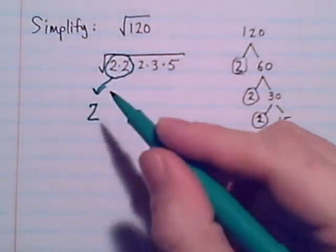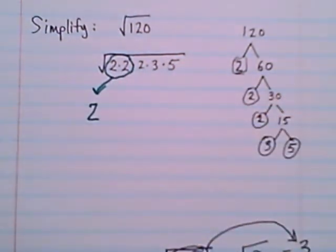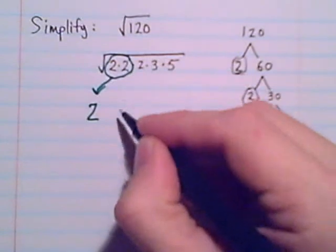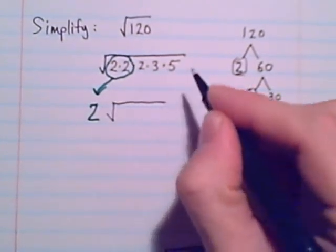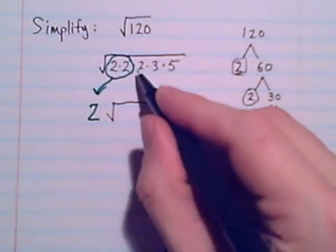if it's a pair inside the radical, we're only going to bring out one. And the rest of those factors in the radical, 2 times 3 times 5, they can't be paired up. So those all need to stay inside the radical. And they need to all be multiplied together.